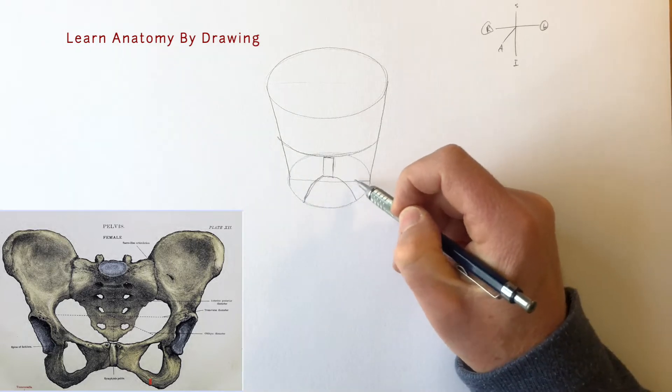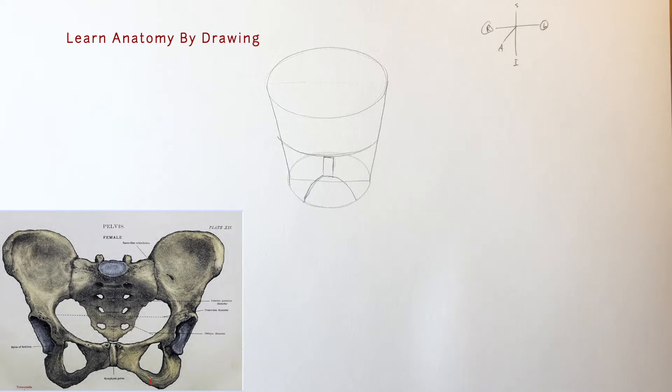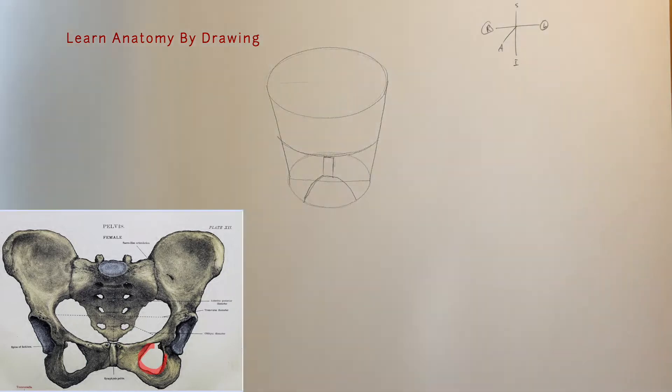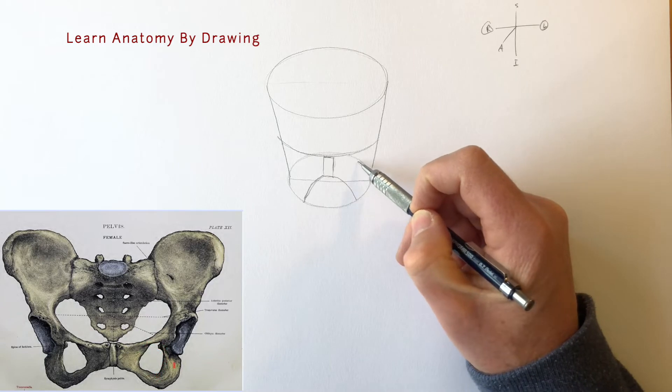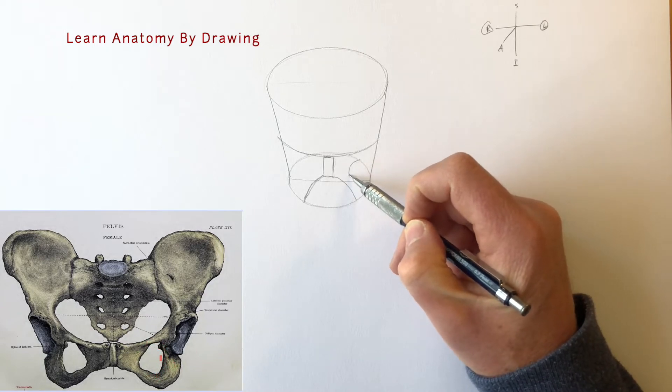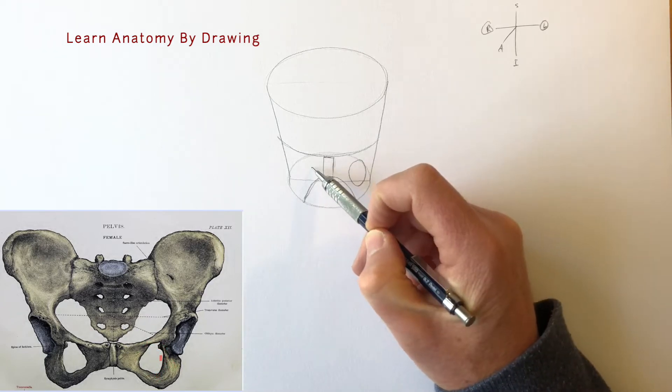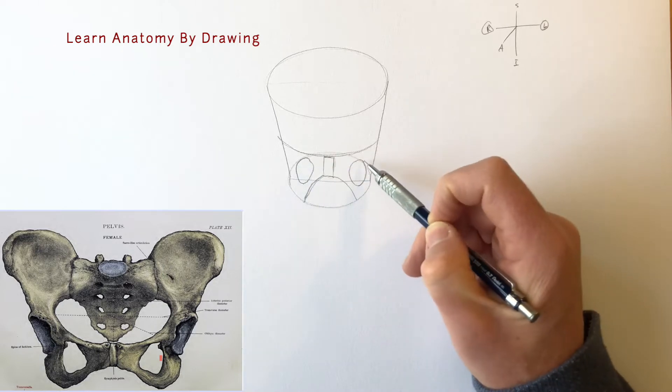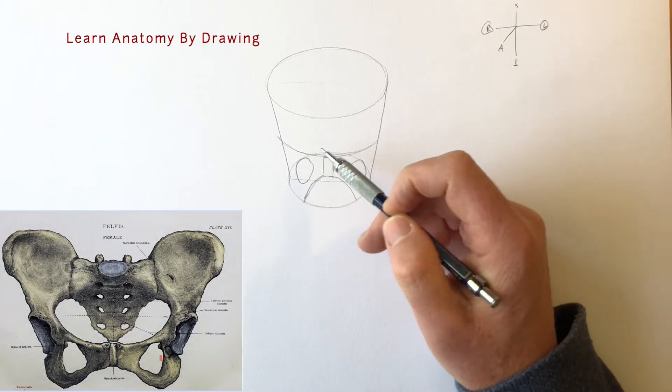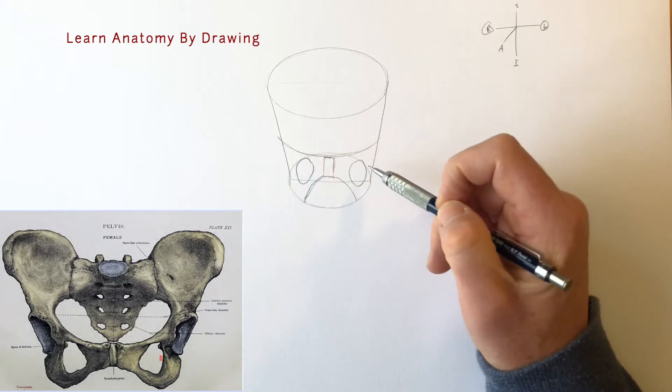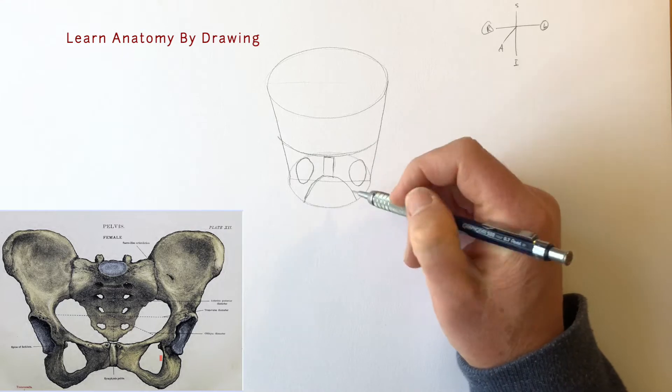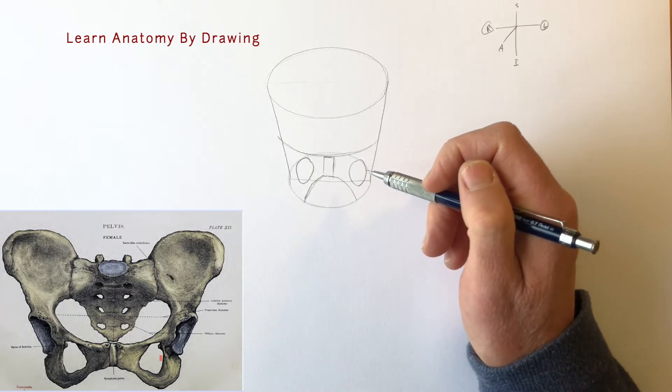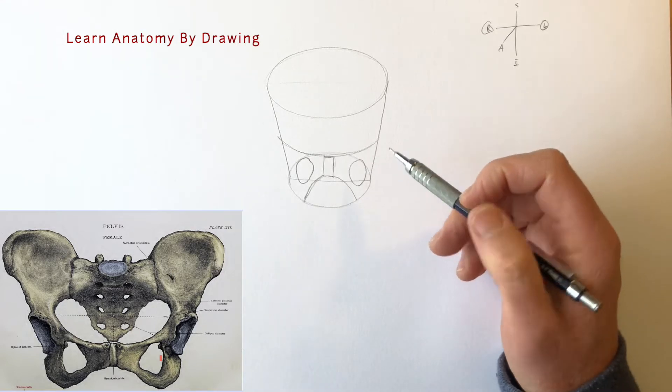Next we're going to draw the hole that goes here on the reference called the obturator foramen. It's forming a circular structure. Just get a rough shape like this and try to get it roughly the same on the other side. Important structures pass through there, we're not going to deal with those today. Foramen means hole, you'll hear that word used a lot in anatomy.